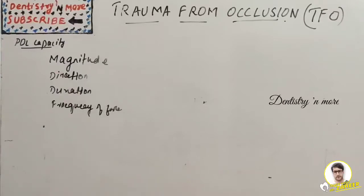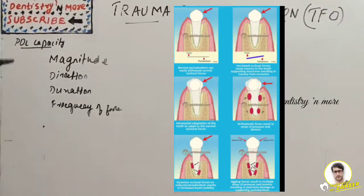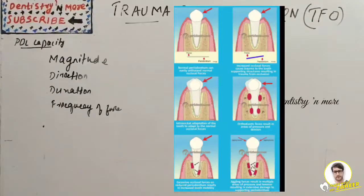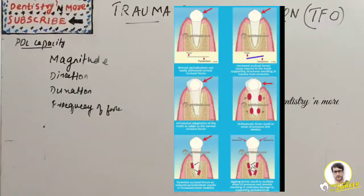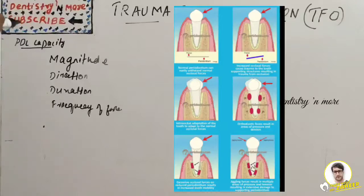The adaptive capacity of the periodontium to occlusal forces varies in different persons and in the same person at different times, influenced by the magnitude, direction, duration, and frequency of force. Regarding magnitude, there will be widening of the periodontal ligament space, increase in width of periodontal fibers, and increase in density of alveolar bone. Regarding direction, changing the direction of occlusal forces causes reorientation of stresses within the periodontium, with fibers arranged to best accommodate the occlusal forces.